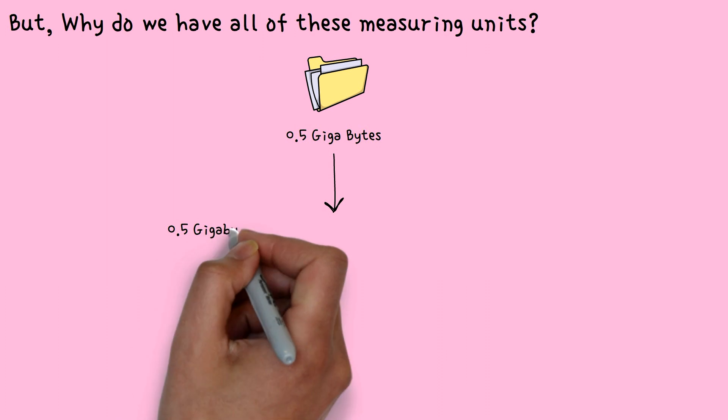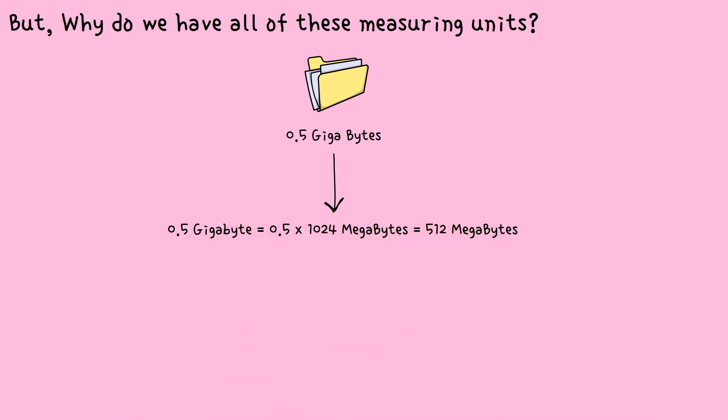So let me explain some more. 0.5 gigabytes can be converted to a bigger digit number by multiplying by 1024, which will give us 512 megabytes. And again, this number can also be converted into an even bigger digit by multiplying by 1024, which will give us 524,000 kilobytes, which can again be converted by multiplying by 1024, which will give us the answer in bytes.